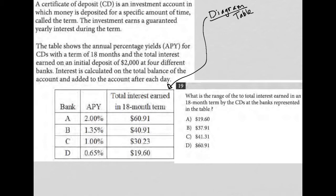I always pay attention to the diagram before reading. It looks like we have three columns here. The first column is for bank, the second is APY, and then total interest earned in an 18-month term. We have different banks — bank A, B, C, and D — what their APYs or interest rates are, and then the amount of interest earned at that bank over 18 months.